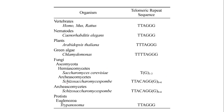Here are some important telomeric repeated sequences of various organisms. In vertebrates such as humans it is T2AG3; in nematodes it is T2AG3; in plants like Arabidopsis thaliana it is T3AG3; in Chlamydomonas it is T4AG3. For fungi, in Saccharomyces cerevisiae it is TG(1-3). In Euglenozoa and Trypanosoma it is T2AG3.